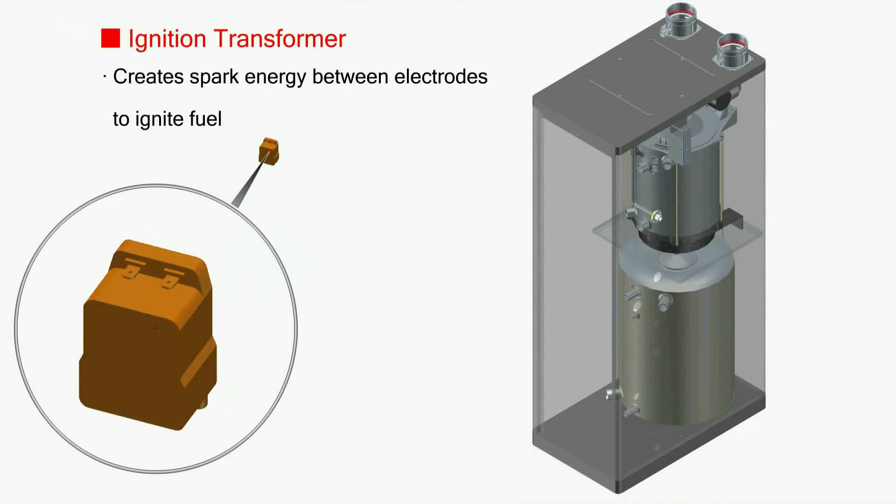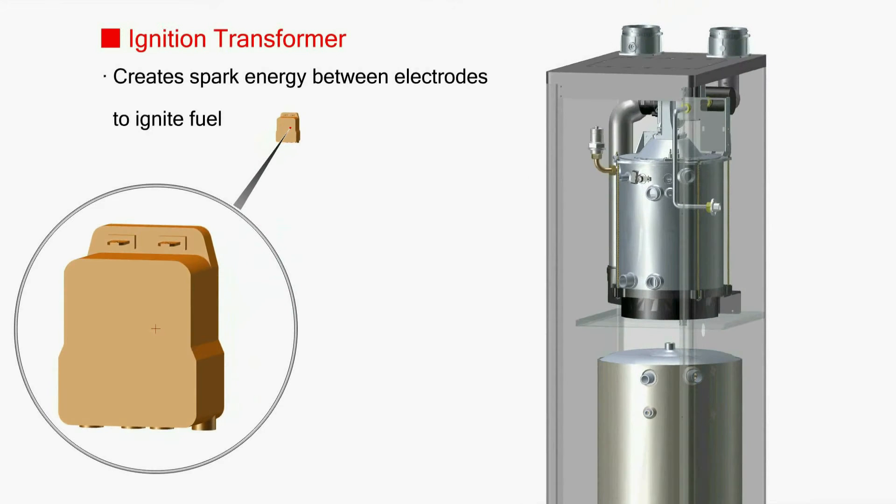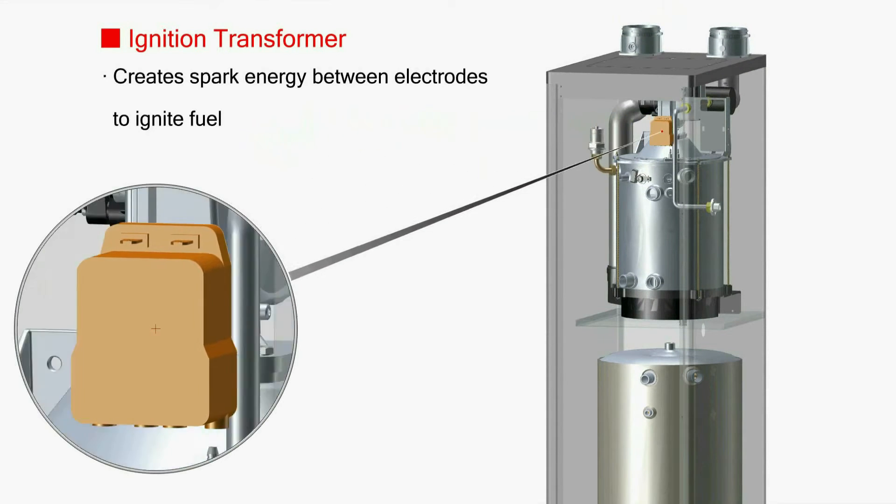An electric transformer discharges continuously high voltage by electric energy in order to supply ignition energy to the burner for ignition.